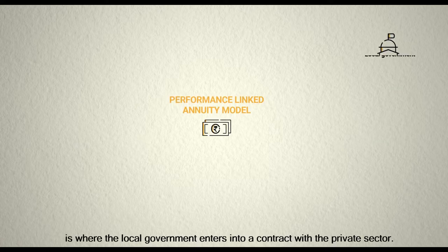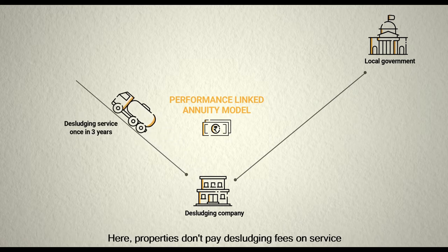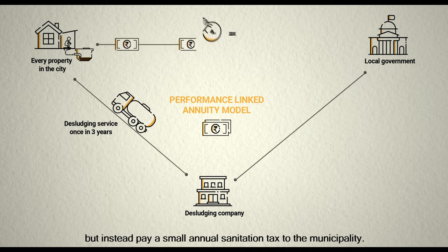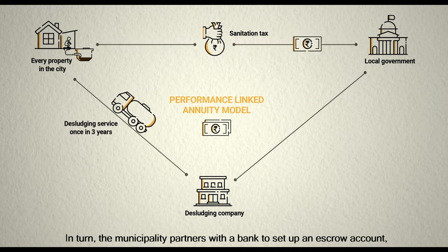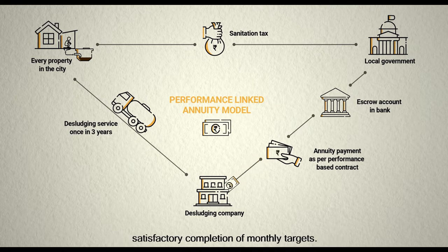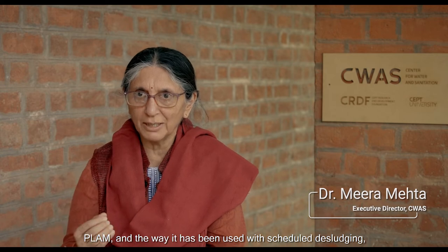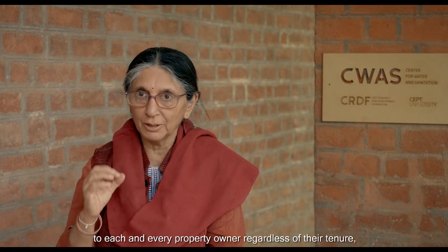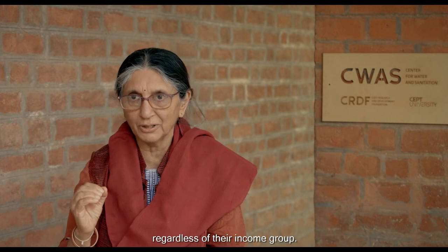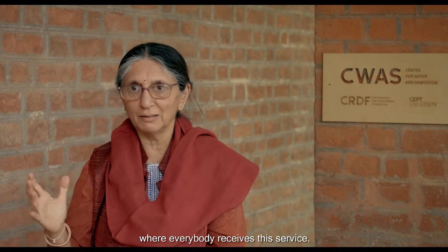Introducing PLAM — the Performance Linked Annuity Model — where the local government enters into a contract with the private sector. Properties don't pay desludging fees on service, but instead pay a small annual sanitation tax to the municipality. In turn, the municipality partners with a bank to set up an escrow account, and payments are released to the private company on satisfactory completion of monthly targets. PLAM with scheduled desludging provides services citywide to every property owner, regardless of tenure or income group — making it a very inclusive approach.